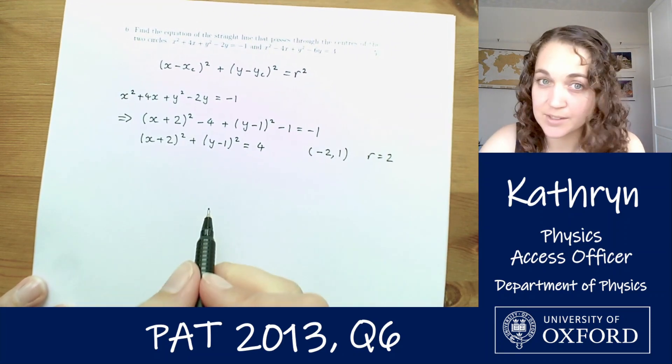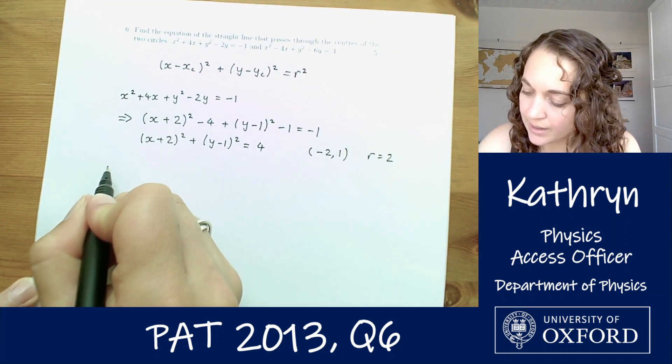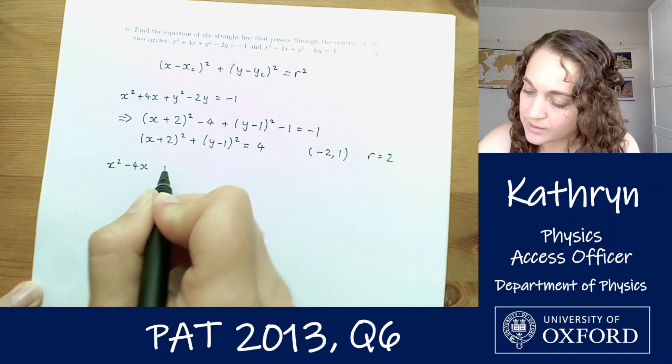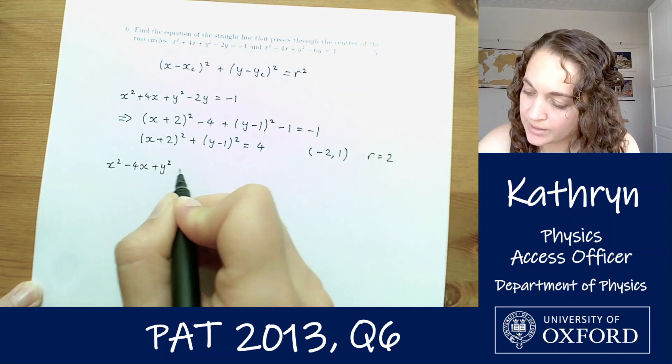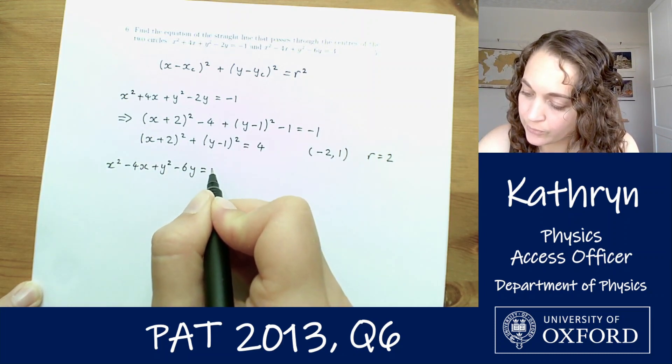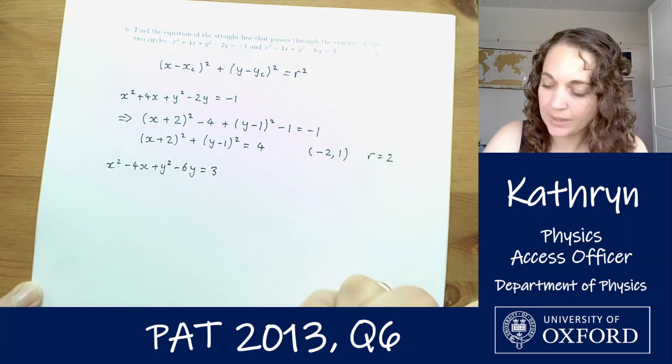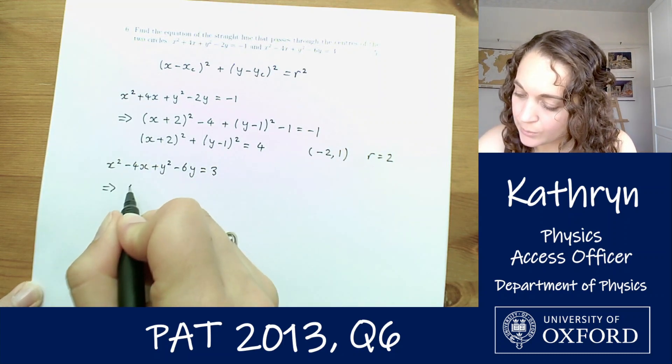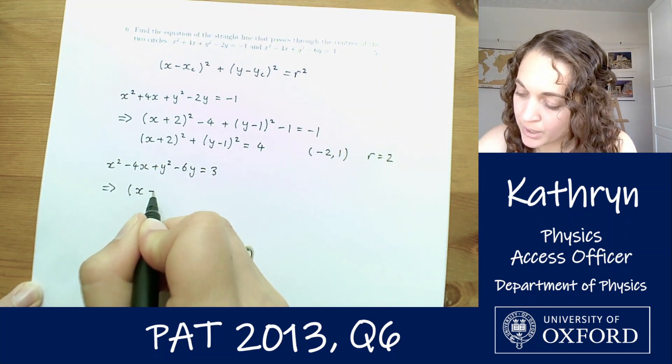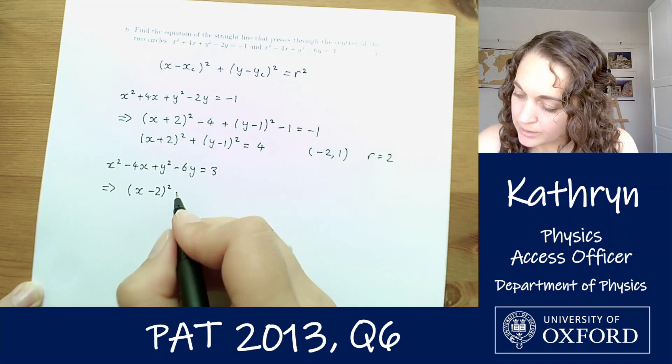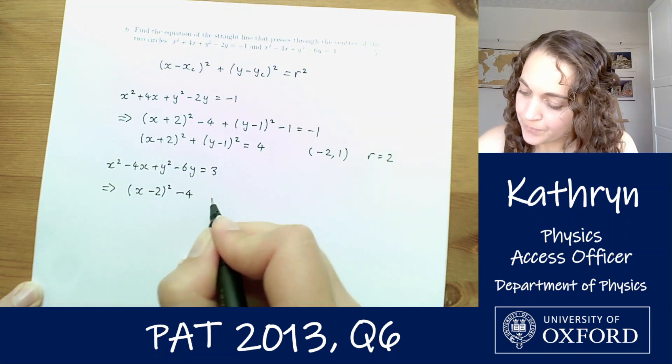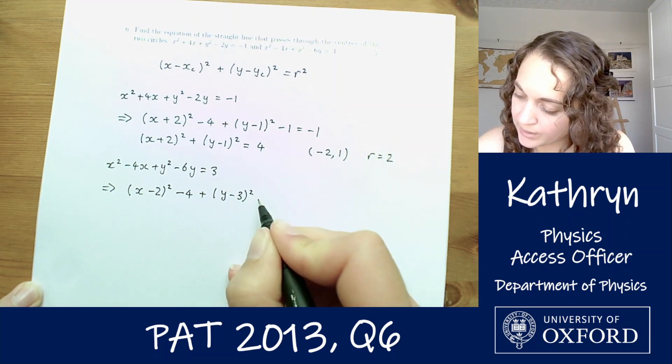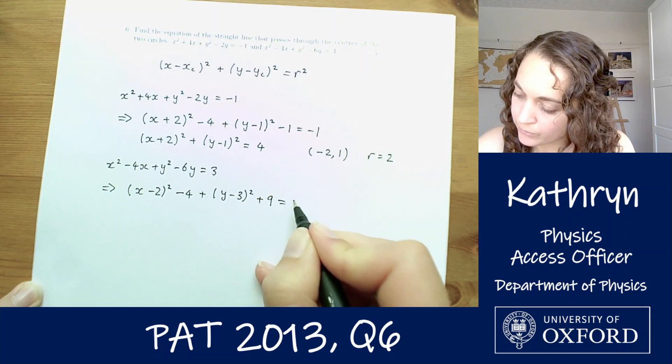So the second circle, the equation for that one is x squared minus 4x plus y squared minus 6y equals 3. So same process again, let's get cracking on completing the square. We're going to have x minus 2 all squared minus 4 plus y minus 3 all squared minus 9 equals 3.